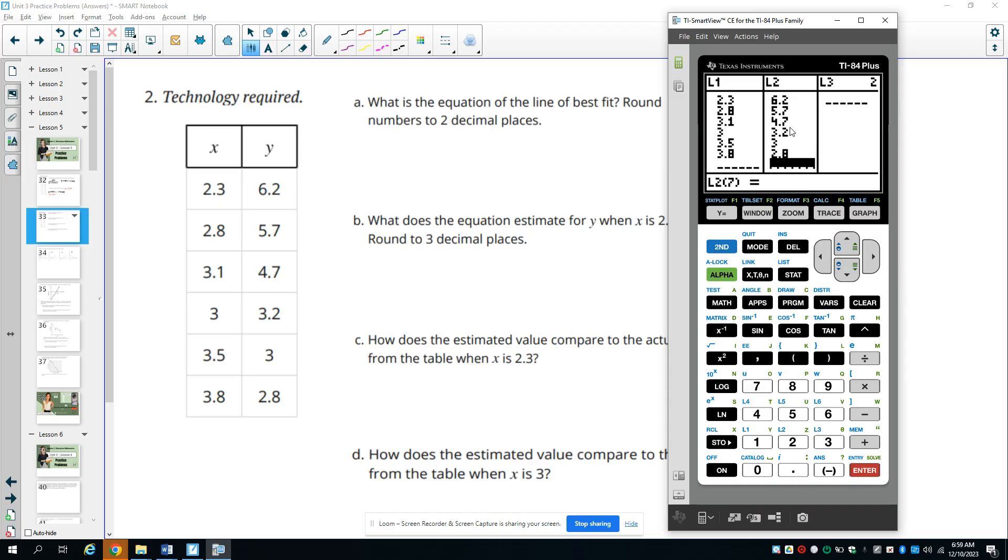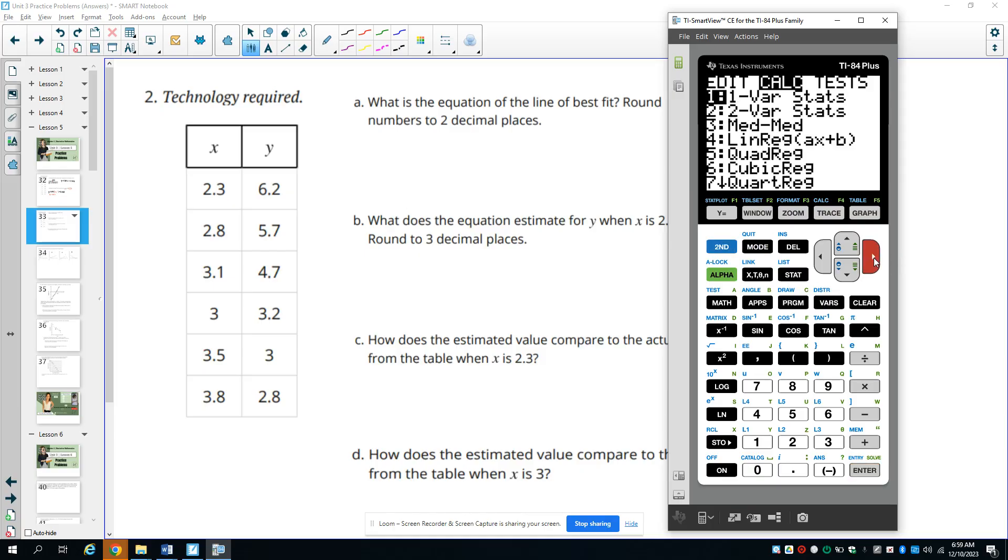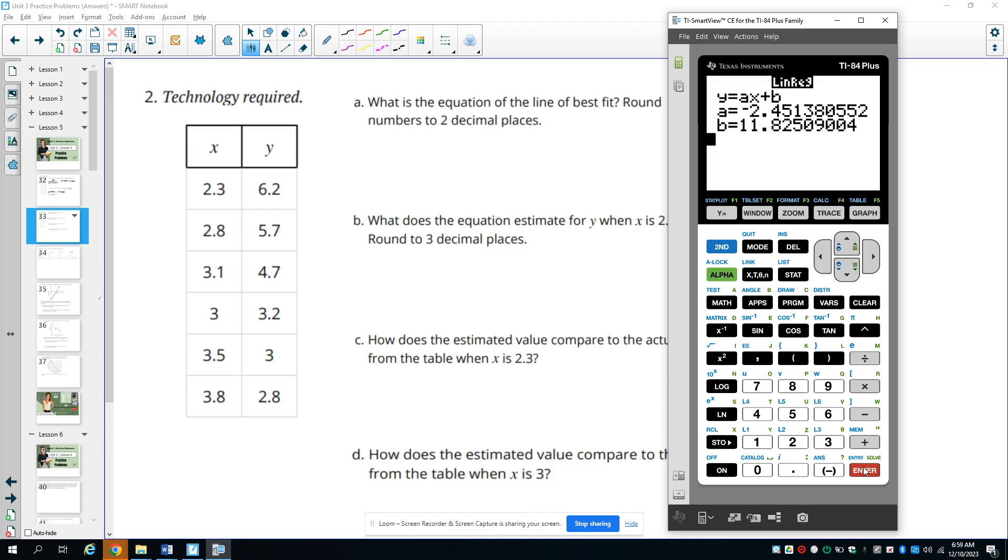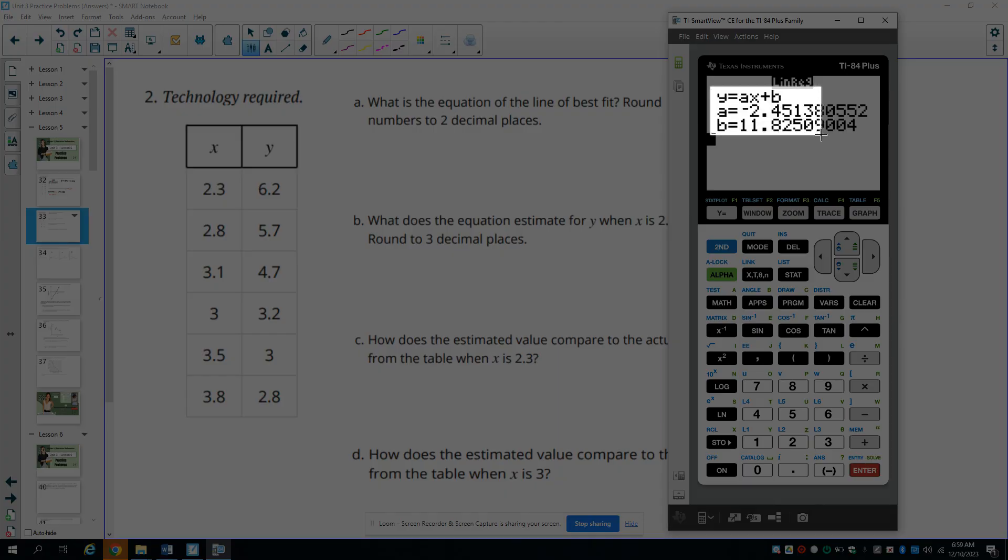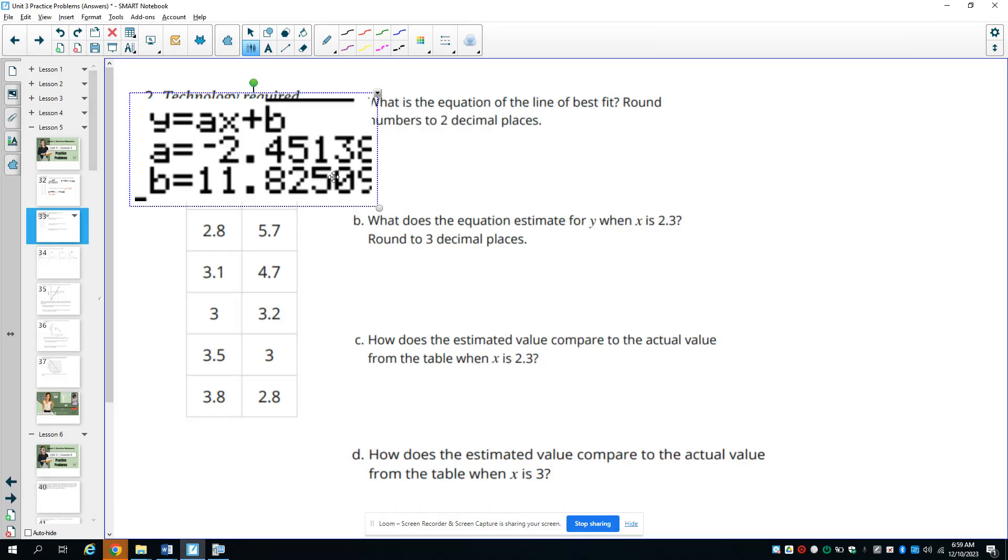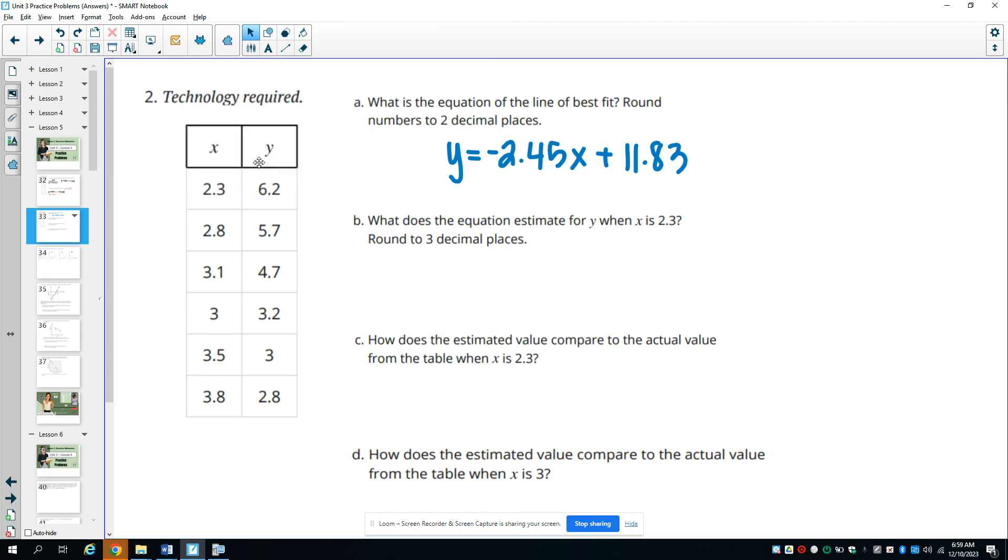Now this time we didn't need to do the scatter plot so you don't have to worry about the graphing. So this time you're just going to go stat over to calculate. And then again you want linear regression. And then you just hit enter and it'll calculate that for you. And then you just plug these in. And this wanted us to round to two decimal places. So we will get the equation y equals negative 2.45x plus 11.83. So this 2 is going to round up because you have a 5 after it. So there's our line of best fit.